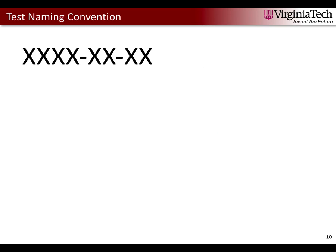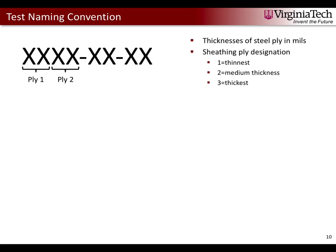I want to briefly talk about our test naming convention. The first four values correspond to ply 1 and ply 2 naming — either the thickness of the steel ply in mils, or for sheathing plies a designation where 1 means thinnest, 2 is medium thickness, and 3 is thickest. The next two values correspond to the fastener, then we have loading type — monotonic or cyclic — and then the trial number.